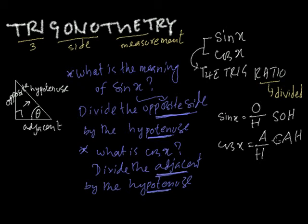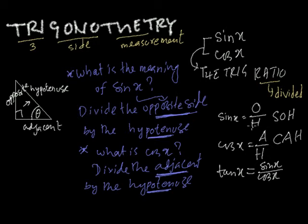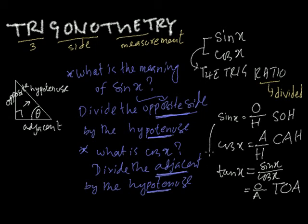From sine and cosine, we can derive a new ratio called the tan ratio. Tan x equals sine x divided by cos x. Writing it out: opposite over hypotenuse divided by adjacent over hypotenuse — the hypotenuse cancels, giving opposite over adjacent. You can remember it as 'TOA.' Tan is not a basic trigonometric ratio on its own; it is derived from sine and cosine.